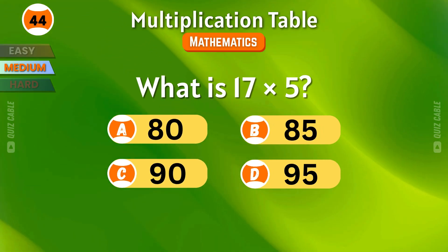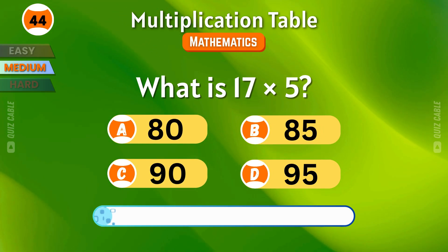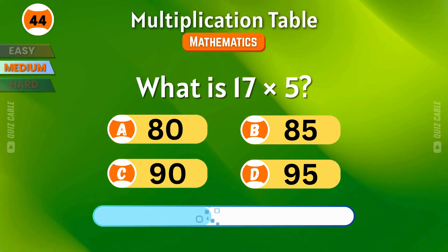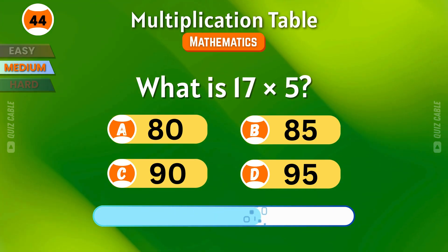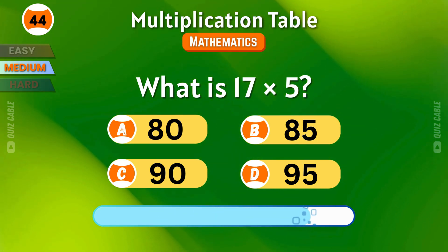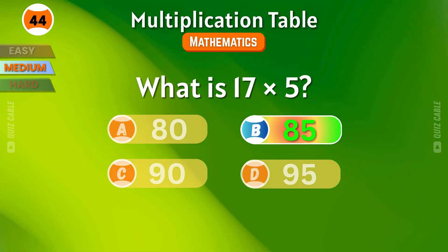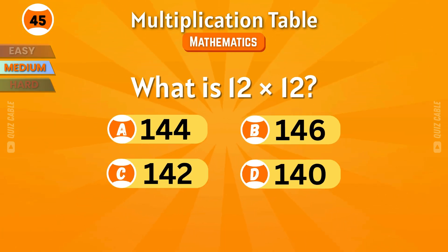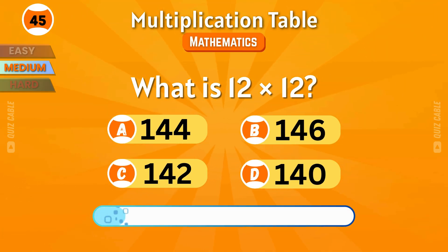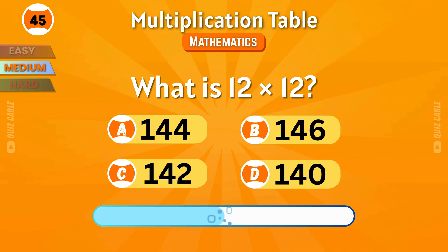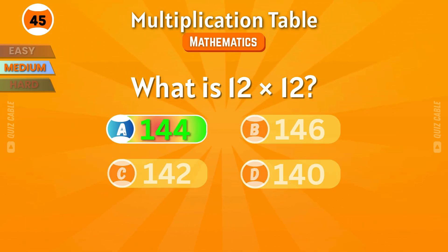What is 17 times 5? That's 85. What is 12 times 12? A strong 144.